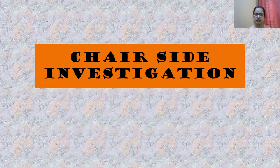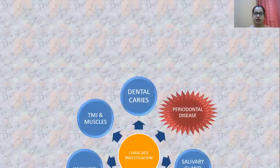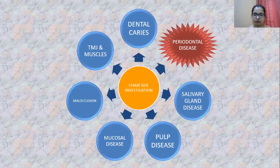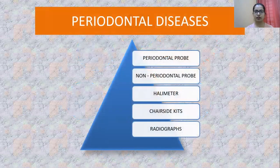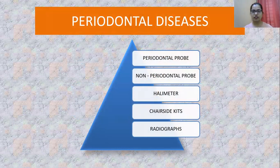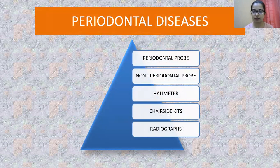Coming to chair-side investigations, there are several types for different diseases in dentistry, but I will be focusing mostly on periodontal disease. We have different types: periodontal probe, non-periodontal probe, telemeters, chair-side kits, and the stereodontal probe.